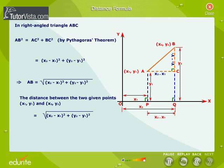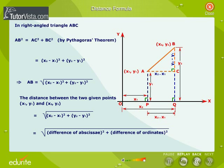That is equal to the square root of the square of the difference of the abscissae plus the square of the difference of the ordinates.